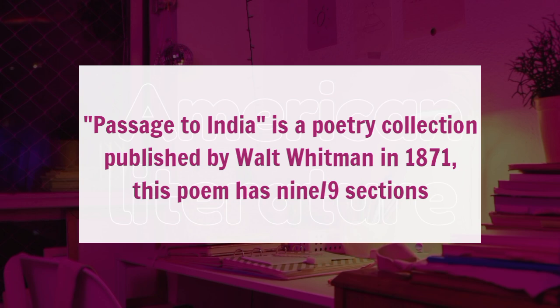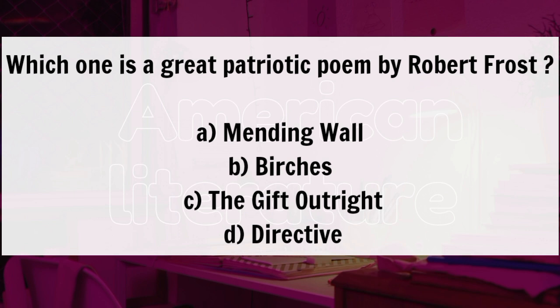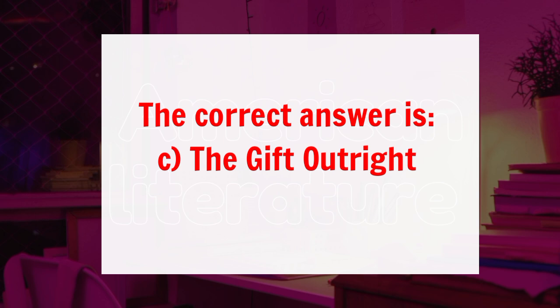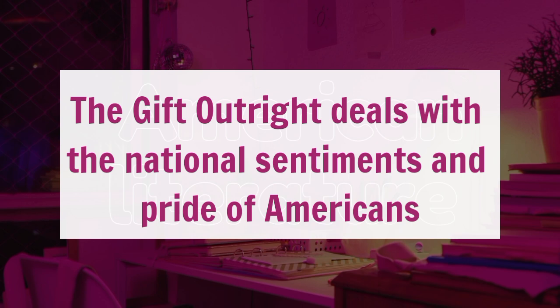Question 13: which one is a great patriotic poem by Robert Frost? A, Mending Wall. B, Birches. C, The Gift Outright. D, Directive. Here the correct answer is Option C, The Gift Outright. The Gift Outright is a patriotic poem that deals with the national sentiments and pride of Americans.